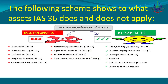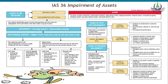As we have discussed, which standards IAS 36 is applicable to and which it is not. For impairment, assets to be reviewed can be individual assets — reviewing each asset to see if it is impaired — or we look at its CGU (Cash Generating Unit). CGU stands for Cash Generating Units: the smallest identifiable group of assets that generates cash flows that are independent of cash inflows from other assets or groups of assets.